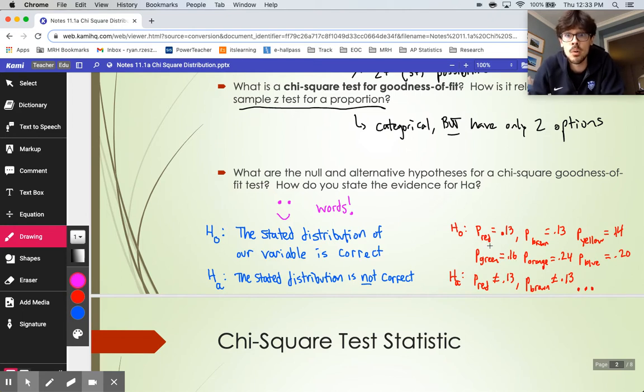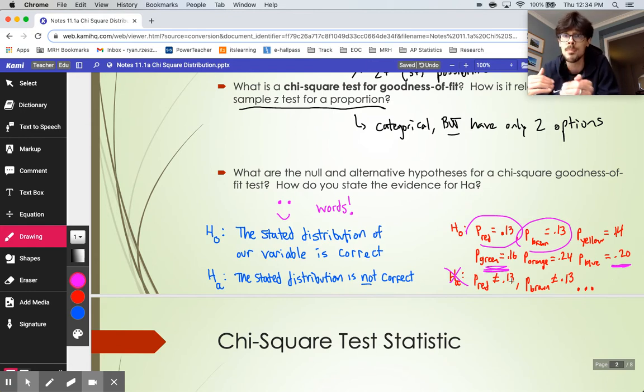You could attempt to do it in symbols like I have written down here in red. H0 said, the portion that are red is 13%, the portion that are brown are 13%, et cetera. But it would not be correct to do what they're saying for HA down here, where the portion of red is not 13%, brown is not 13%, yellow is not 14% and so on. If I just kept on doing not equals for each of my HA, that is saying they all would need to be different for my alternative. That doesn't have to be true.